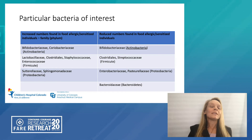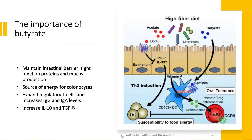The buzzword at the moment in the microbiome field is butyrate. Butyrate is produced by the gut bacteria from a high fiber diet. When we have higher levels of butyrate in the gut microbiome, we can see that it helps maintain the intestinal barrier in terms of tight junctions and mucus production. It also acts as a source of energy for colonocytes. Higher butyrate levels are also associated with expansion of T-regulatory cells, increase in IgA and IgG, and increased levels of the two cytokines closely associated with regulatory cells: IL-10 and TGF-beta.